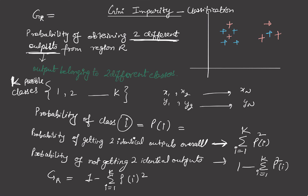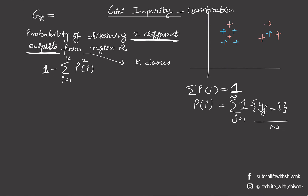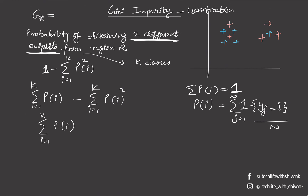This Gini coefficient can also be written in a different form. Since Σpi = 1 (because pi is the probability of getting an item of class 1, 2, ..., or K), we can replace 1 with Σpi and rewrite the expression as Σpi(1 - pi). So Gini impurity = Σpi(1 - pi) is another equivalent form.